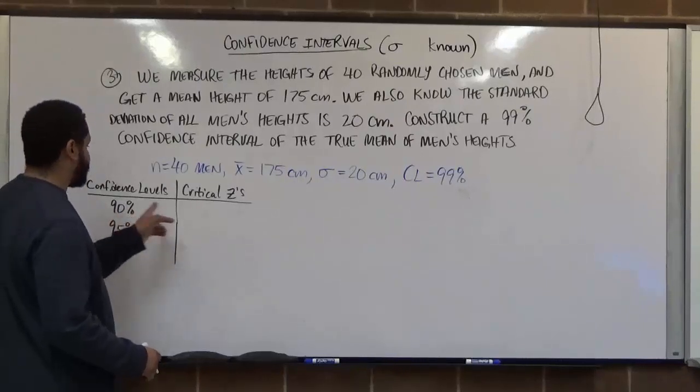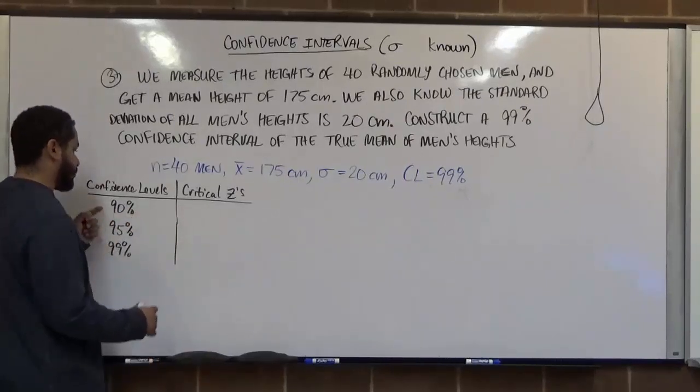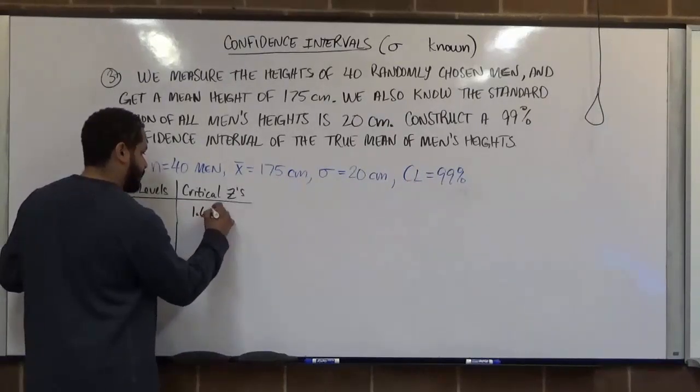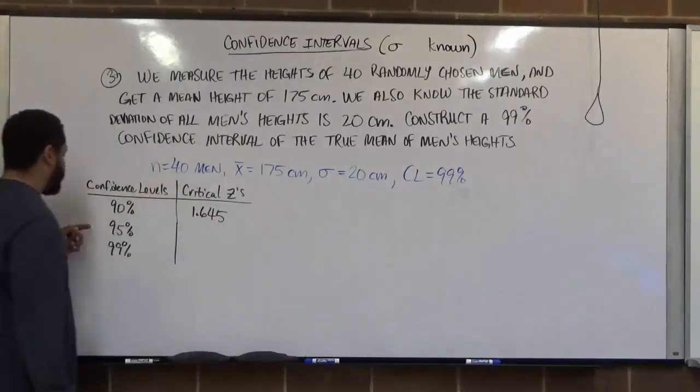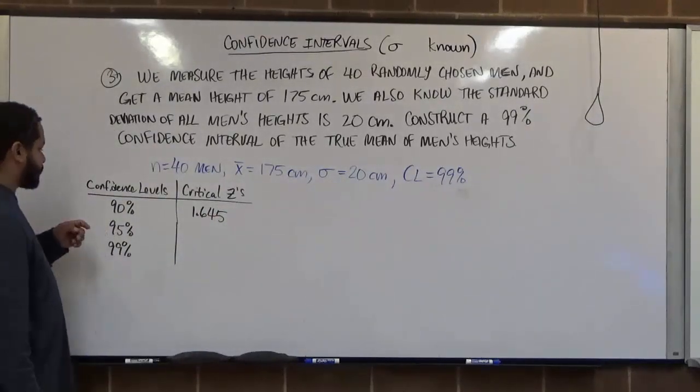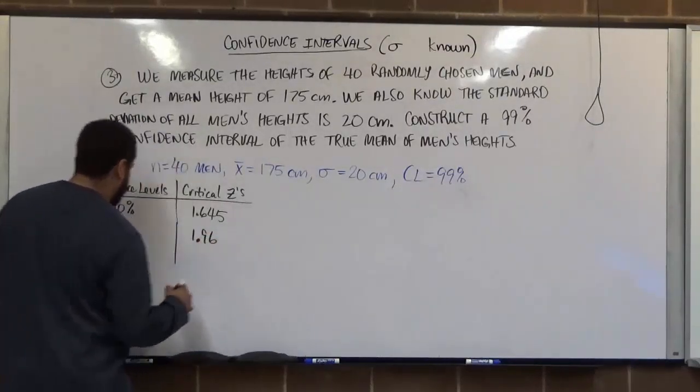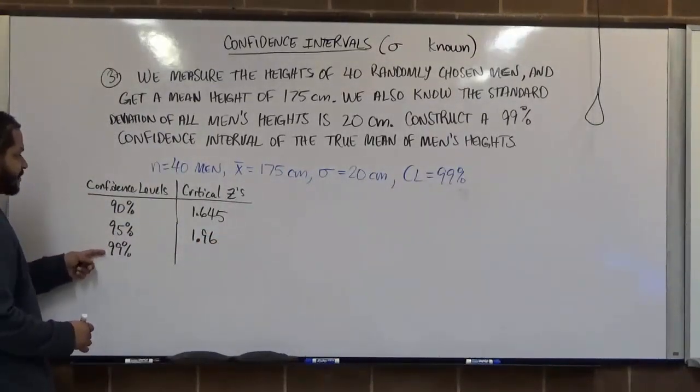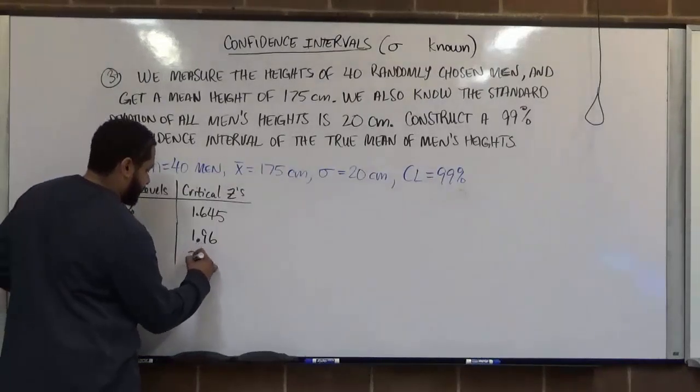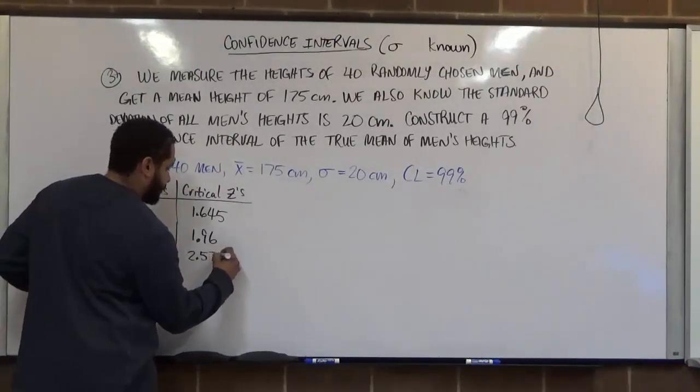Now, for 90% confidence, our critical z value is 1.645. For 95% confidence levels, we're going to have a critical value of 1.96. And for 99% confidence levels, the critical value is going to be 2.576.